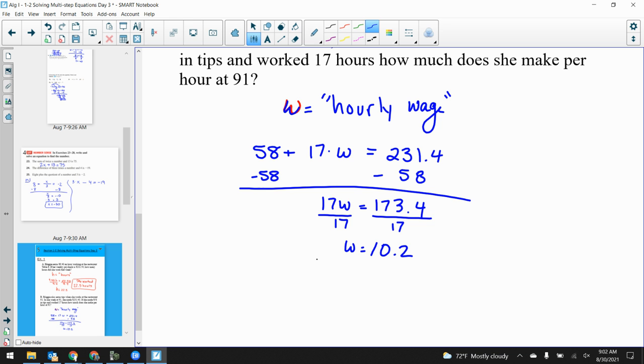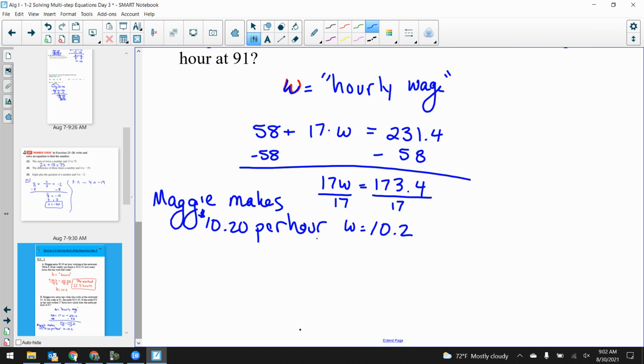It's not enough to say W equals $10.20. Answer the question. What is the true answer to this problem? Maggie makes $10.20 an hour. Good. Maggie makes $10.20 per hour at this restaurant. That's my answer.